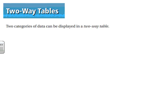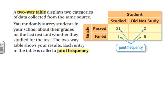In today's video we're going to learn about two-way tables, where you can display two different categories of data. It's going to be data that's collected from the same source, so you might ask a class of kids two different questions and from their responses you'd be able to make a two-way table.